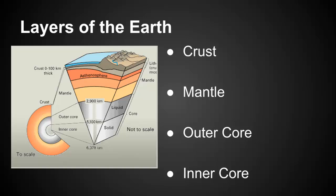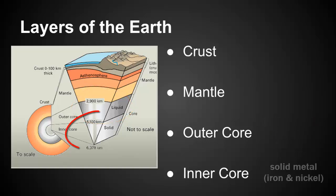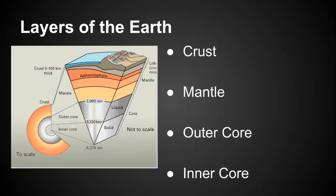Just below the mantle, we have what's called the core. The core is divided into two sections: there's the outer core, which is liquid metal, and then we have the inner core, which is solid. The reason why the inside of the core is solid is because there's so much pressure and gravity pulling to the center of the earth that it causes those particles to be extremely close together.